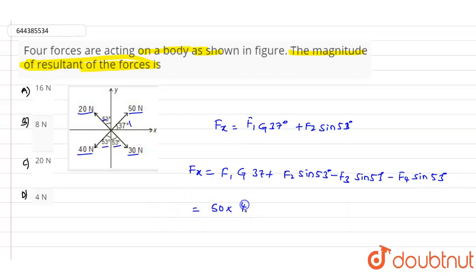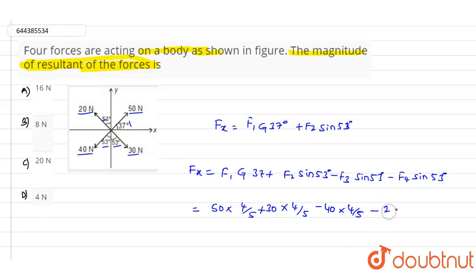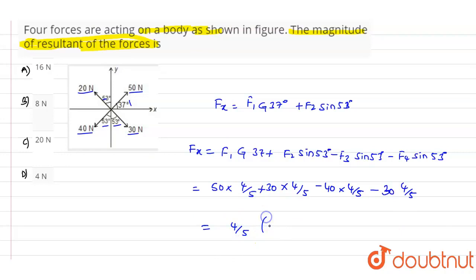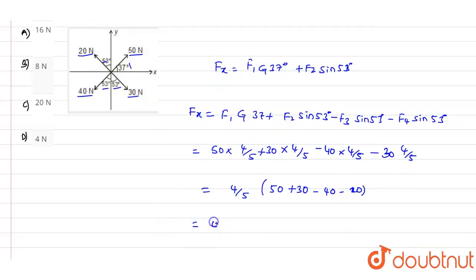Simplifying the Fx equation: Fx = 50×(4/5) + 30×(4/5) − 40×(4/5) − 20×(4/5). Taking 4/5 as common, we get (4/5)×(50 + 30 − 40 − 20) = (4/5)×20 = 16N. So the value of Fx is 16N.